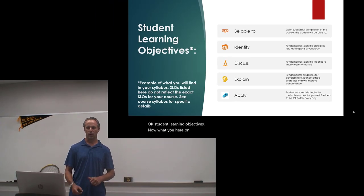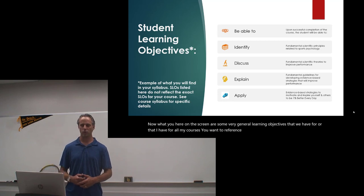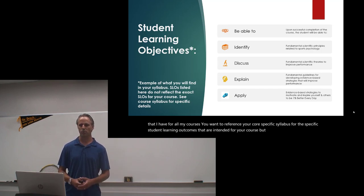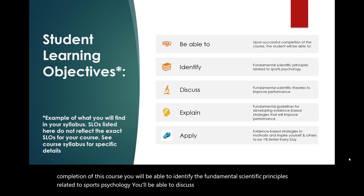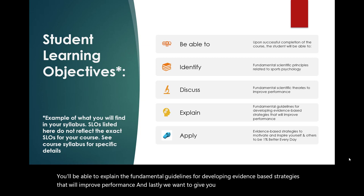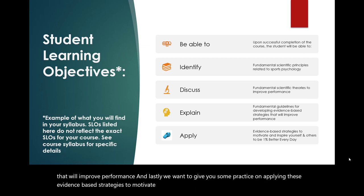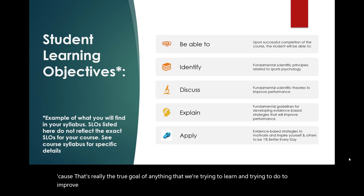Student learning objectives. What you see here on the screen are some very general learning objectives. You'll want to reference your course-specific syllabus for the specific student learning outcomes intended for your course. But in general, on successful completion of this course, you will be able to identify the fundamental scientific principles related to sports psychology, discuss the fundamental scientific theories to improve performance, explain the fundamental guidelines for developing evidence-based strategies that will improve performance, and apply these evidence-based strategies to motivate and inspire yourself and others to be 1% better every day.